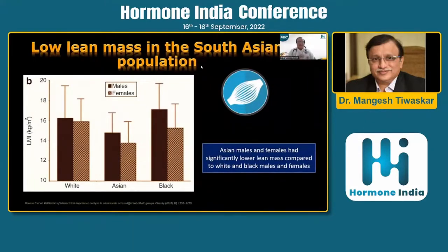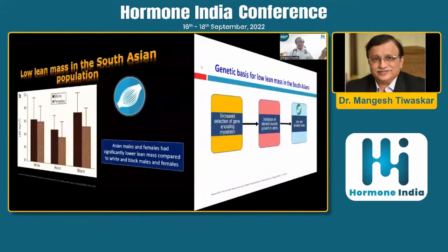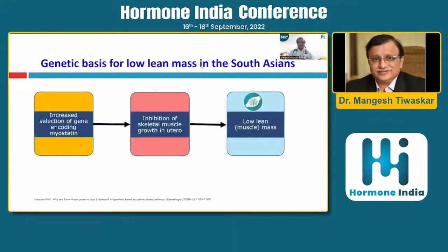In comparison to Caucasians or Blacks, Asian males and females have significantly lower muscle mass — we are sarcopenic. This was beautifully demonstrated in a paper published in the BMJ, and the reason for this is usually a genetic bias that we carry.